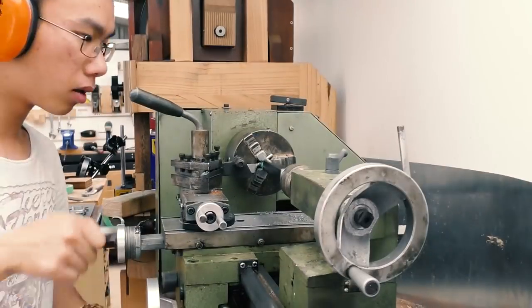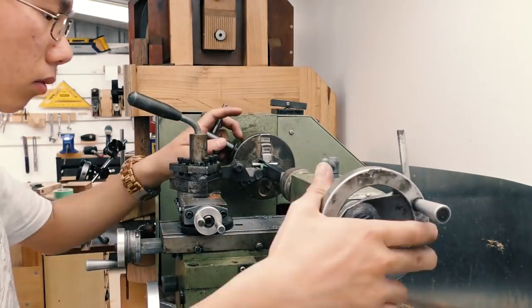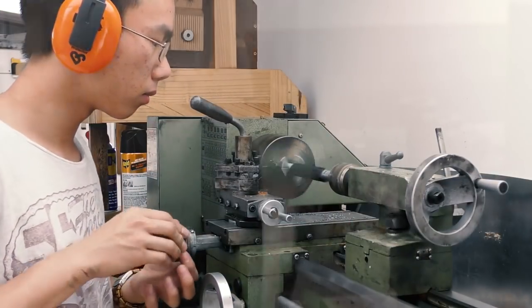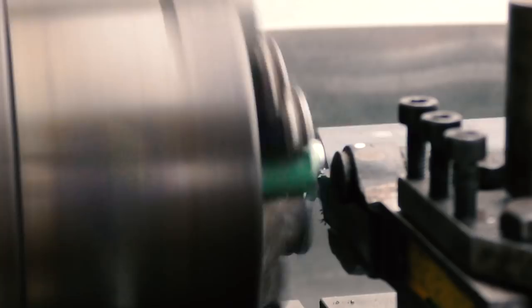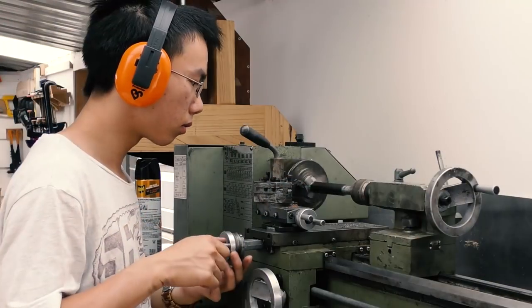After each step, I swap out the axle with the other one while maintaining the same carriage position on the lathe. This ensures that the steps on both axles are from the same distance. Then I just move the carriage to align with the next mark on the metal and make the next cut.